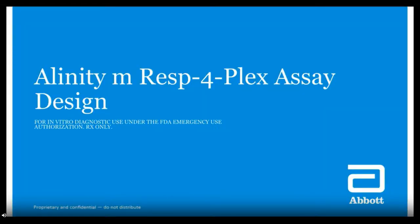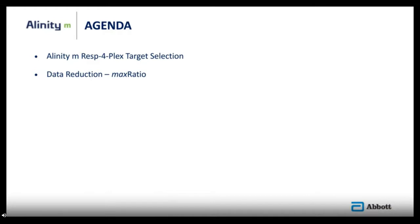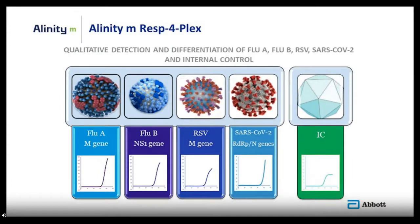I will now introduce the design of the Abbott Molecular Alinity M RESP-4-Plex assay. For flu A, the assay targets the matrix gene; the non-structural gene for flu B; the matrix gene for RSV; and the RdRp and N gene for SARS-CoV-2. In addition, a non-competitive internal control based on a non-relevant plant gene is included to ensure the performance of reagents and the system.